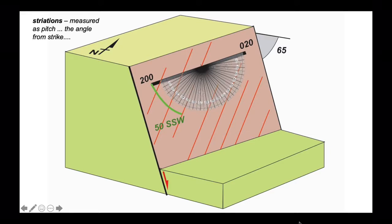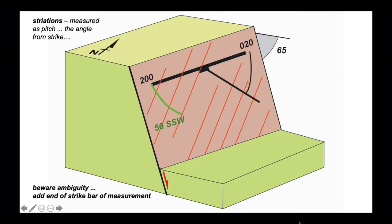But notice we've also had to record which end of the strike bar we've made the measurement from. In this case we've measured from the 200 bearing which is south-south-west. So the pitch of the striation on this fault plane is 50 south-south-west. We do that because there's an ambiguity if we don't record that direction. There's a 50 degree orientation measured from 020 which is not the orientation of the striations. So always record the end of the strike bar that you've made the measurement from.